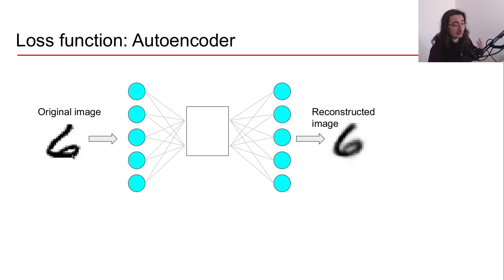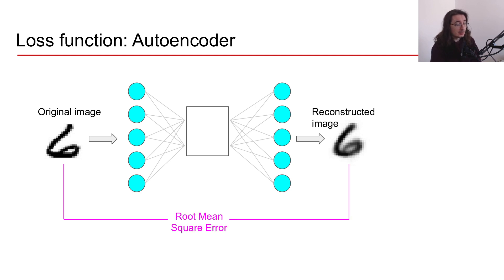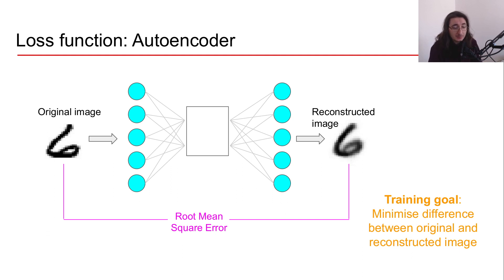In an autoencoder we have an image that we pass through the autoencoder itself. The image gets encoded and then decoded, and at the end of the architecture we have a reconstructed image. The loss function for an autoencoder uses root mean square error — we compare the original image with the reconstructed image on a pixel-by-pixel basis. The ultimate goal of our training process is minimizing the difference between the original and the reconstructed image.